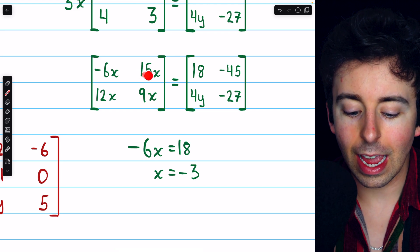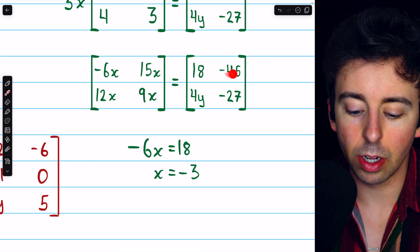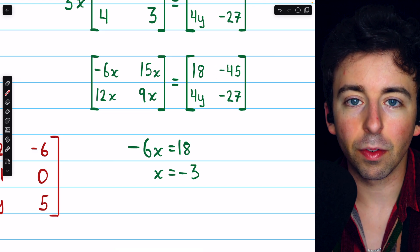But we could have also chosen the entries in row 1, column 2. 15x equals negative 45 would also tell us that x equals negative 3.